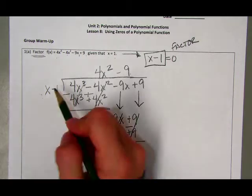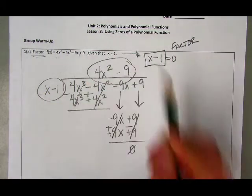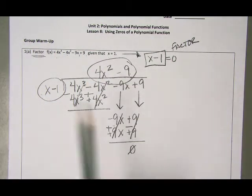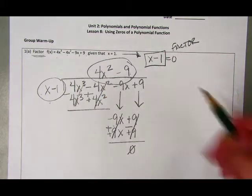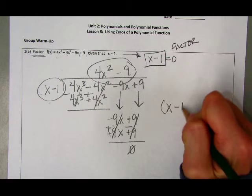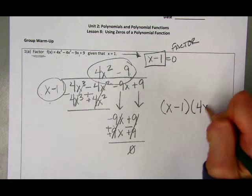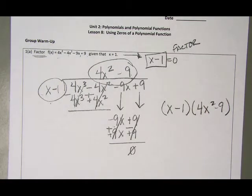My factors are going to be the two pieces of information that I got - one when I was dividing, and two what I got as my answer. So my two factors I get here are 4x squared minus 9 and x minus 1.